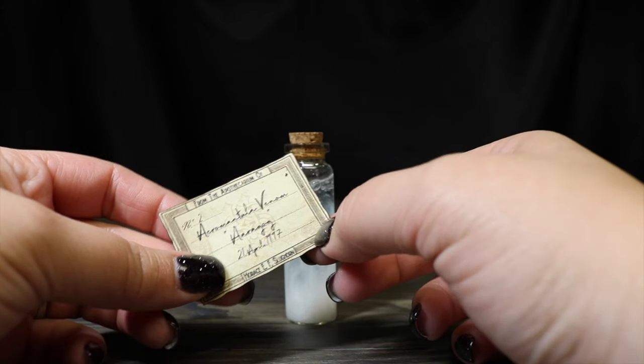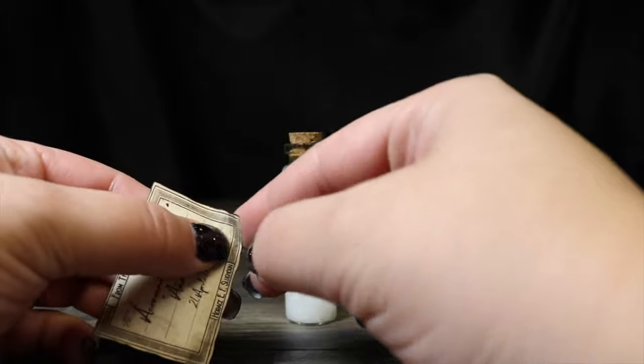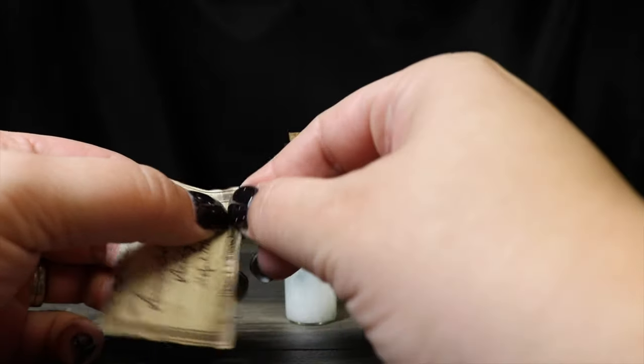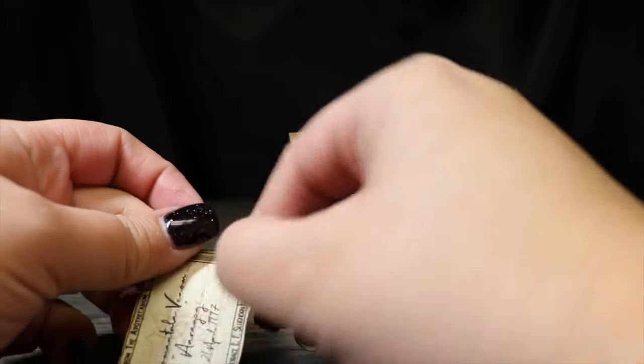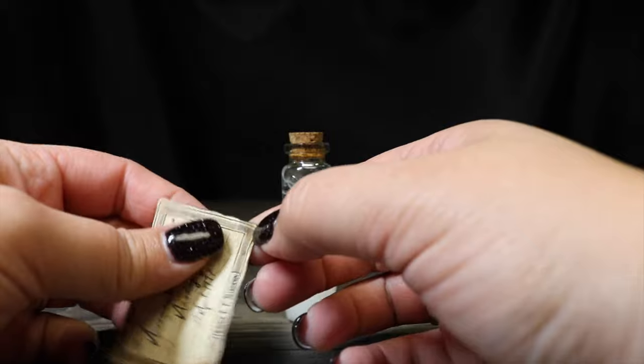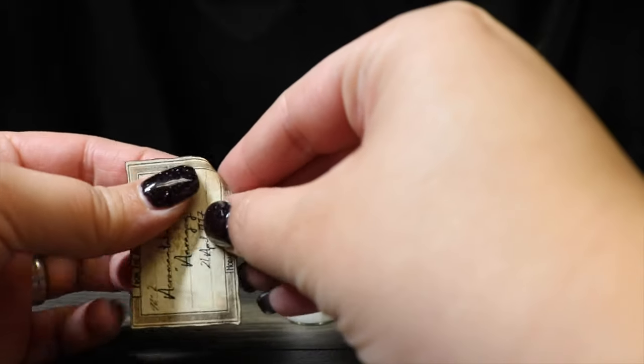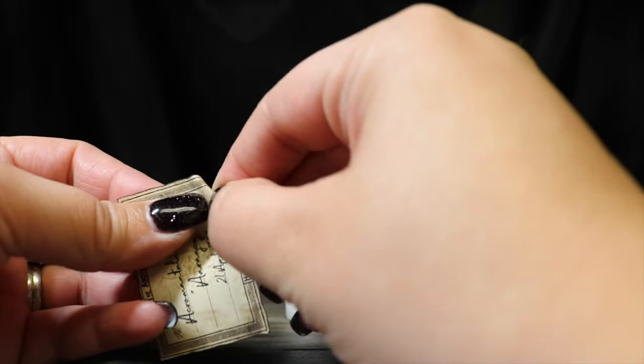So you can kind of see that there's like a little line here, like it might be a fold. I'm actually going to go ahead and fold my label there so that when I stick it on it may retain some of that little bit of a crease in there, and just kind of give it a little bit more of an aged, worn look.